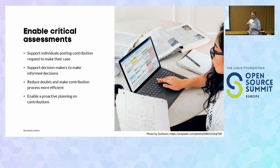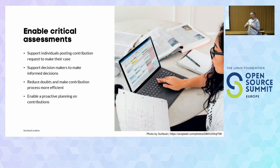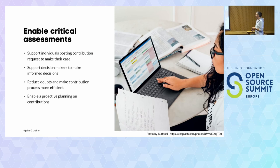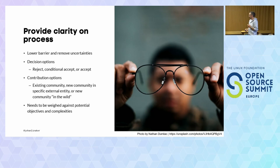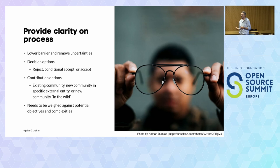It reduces the number of clarifications needed and enables more proactive release planning or contribution planning. For example, in your product planning process, when you're setting up a roadmap, you can look ahead at which parts you should open source so you can plan this from the beginning. Also important here is to really lower the barriers so that people are comfortable and don't think that this is overly complex, reducing friction and removing information that they don't need.